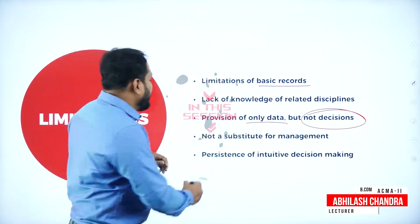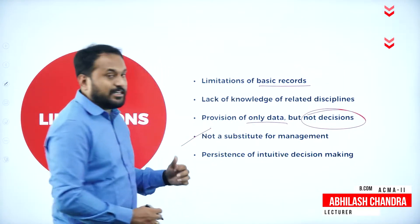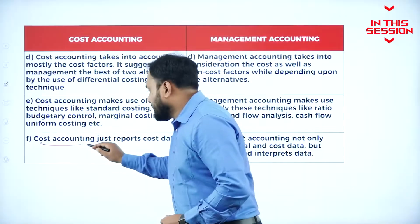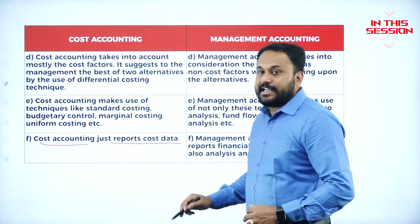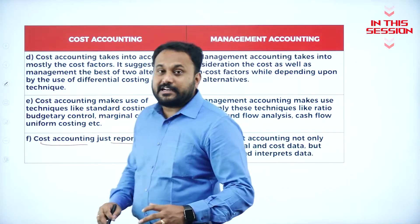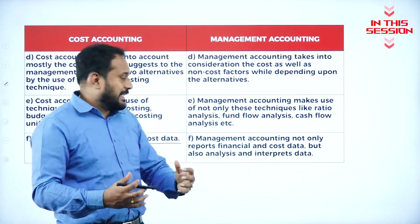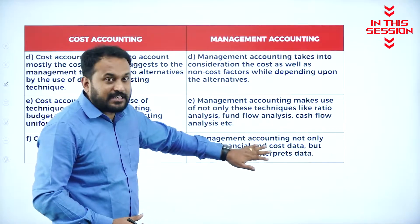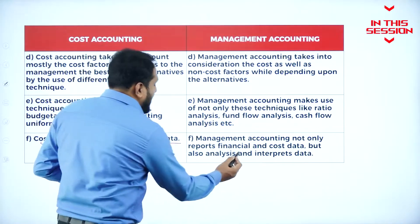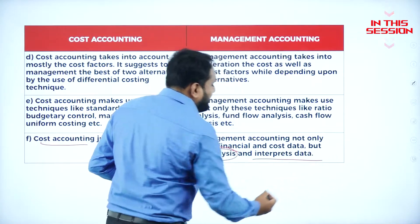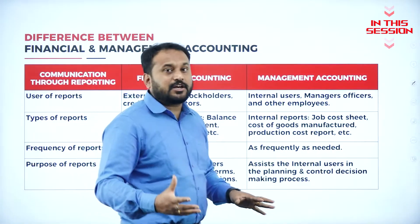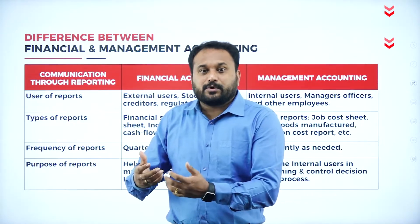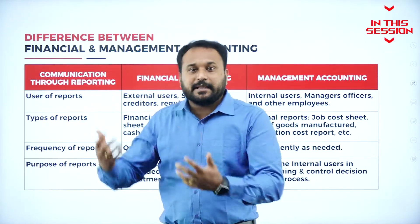The biggest limitation is that management accounting will not serve as a substitute for management. Cost accounting just reports cost data, but management accounting does something more than that. Management accounting not only reports financial and cost data but also analyzes and interprets the data. Financial accounting is all about historical data — it deals with the past.